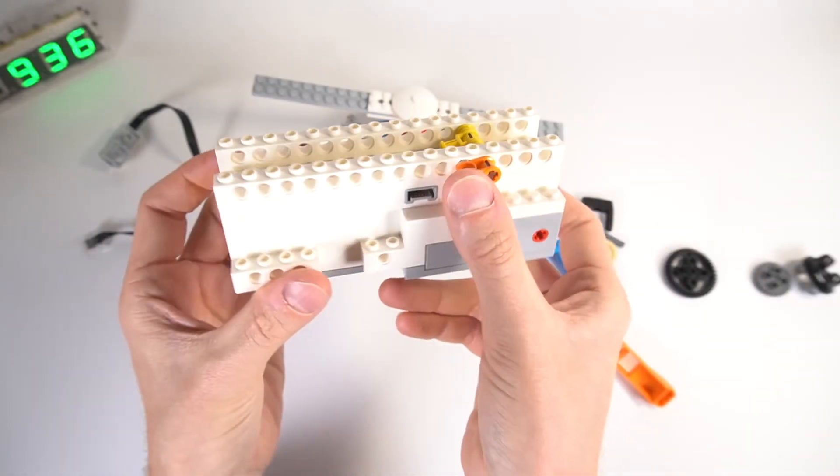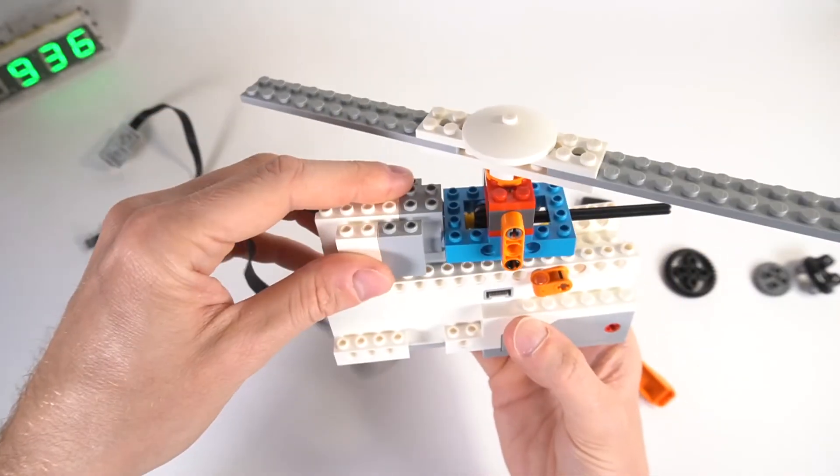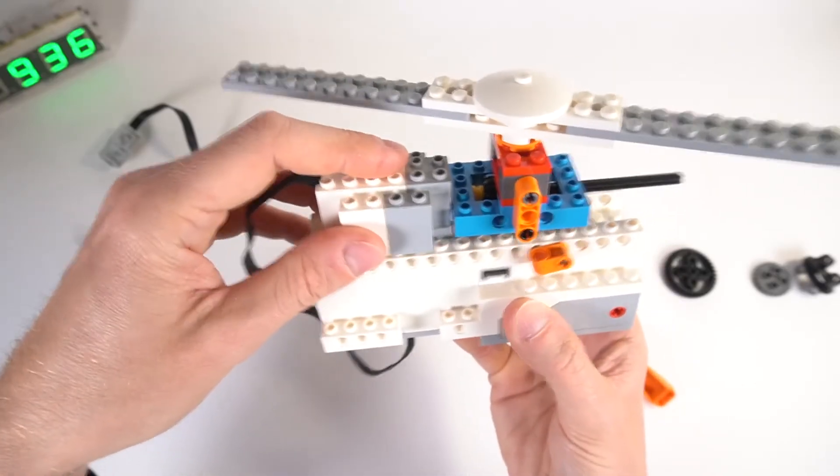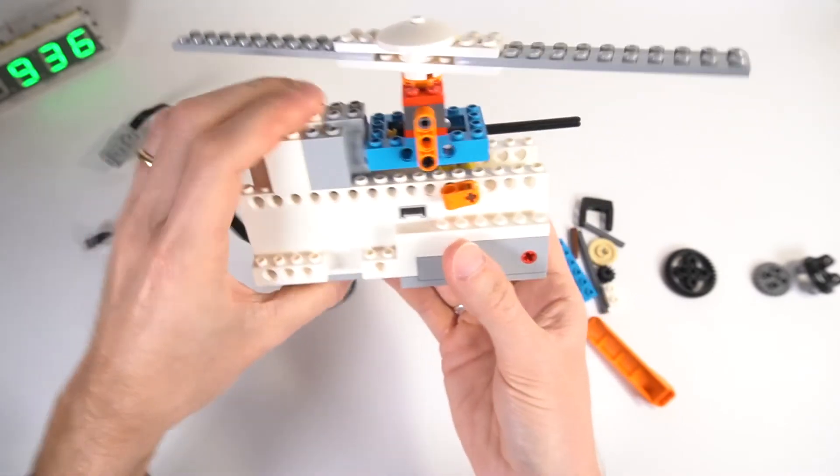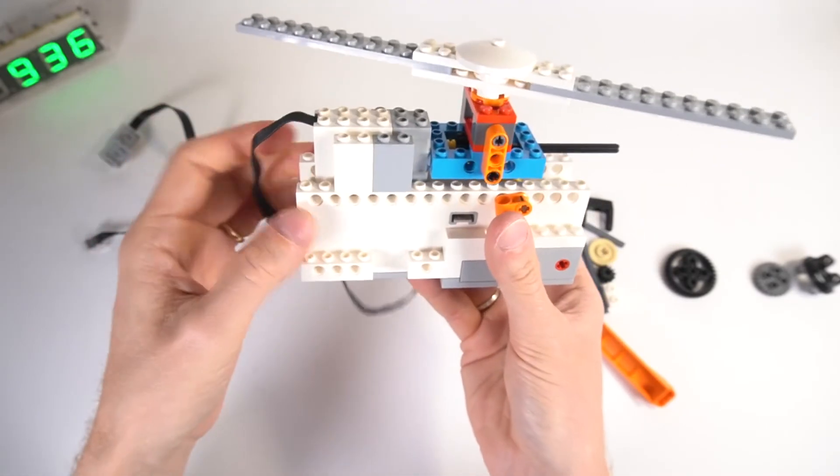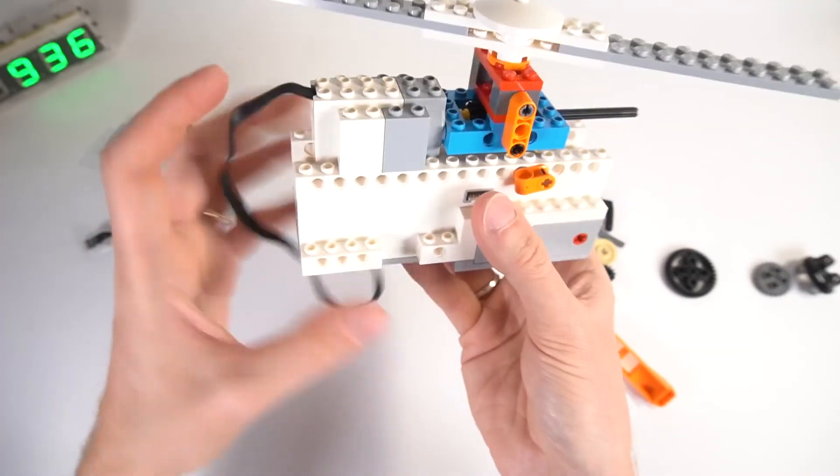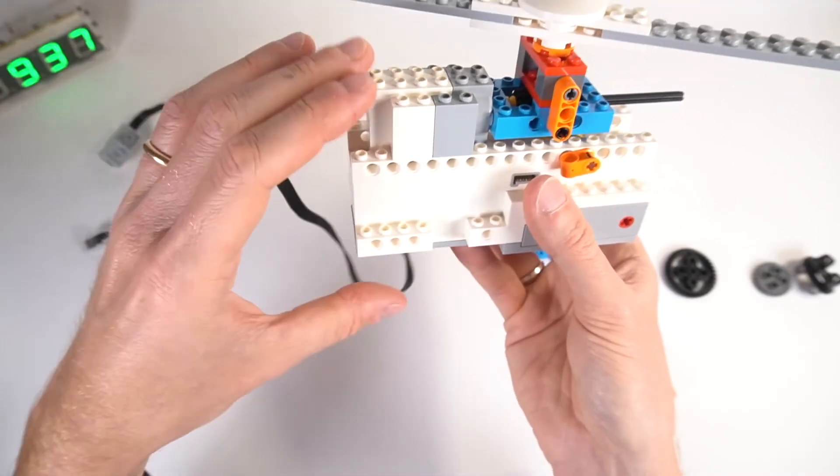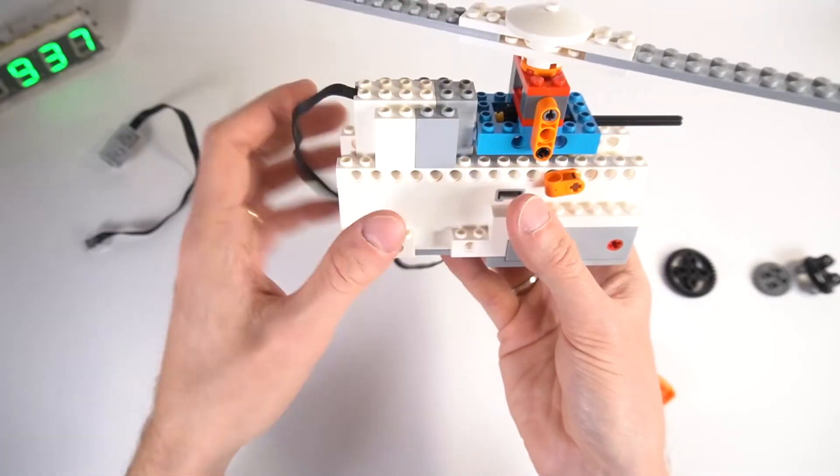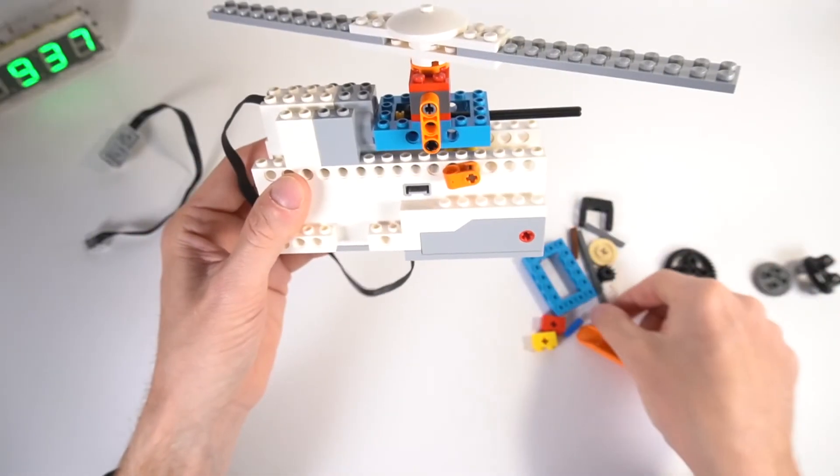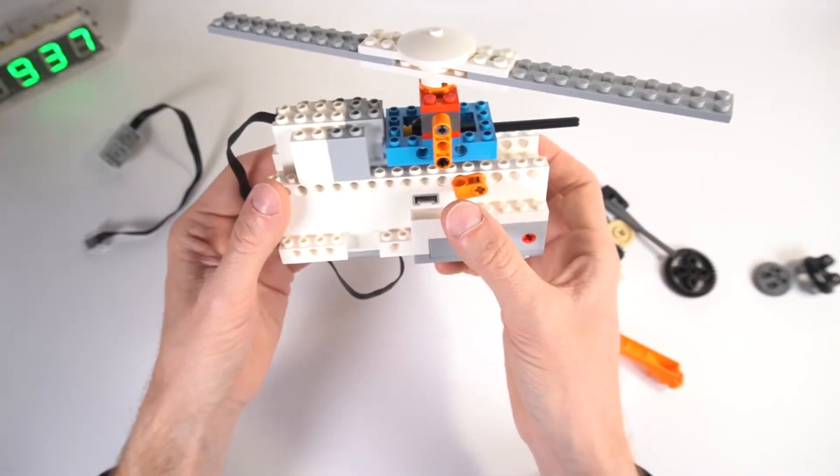So I can attach something on top whenever, wherever I want without any problem. So you see that it's hidden. Now I could even make this lower because now it's too bulky and the whole helicopter would be too bulky. And the propeller is too low. I might even put this back but that's for a later design stage.